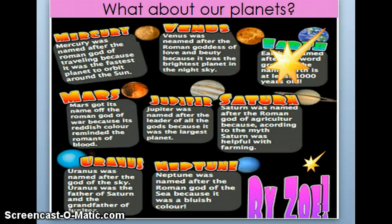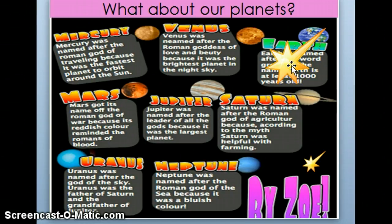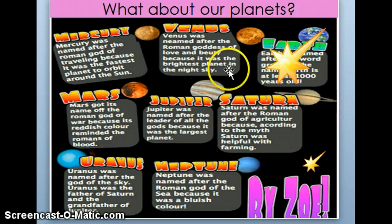Another contribution the Romans made is they named the planets. They named all but one planet — the Earth. They forgot to name the Earth because they were on it and didn't think about it. Mercury was named after the Roman god of traveling because it was the fastest planet to orbit around the sun. Venus was named after the Roman goddess of love and beauty because it was the brightest planet in the night sky.